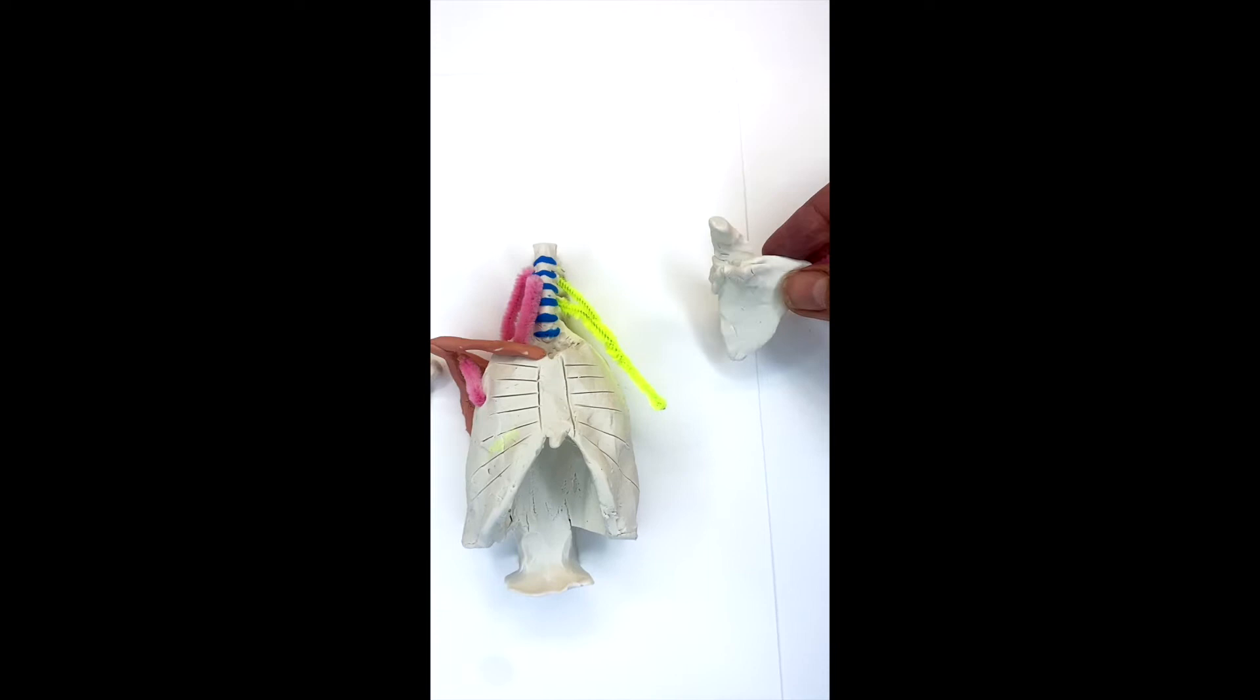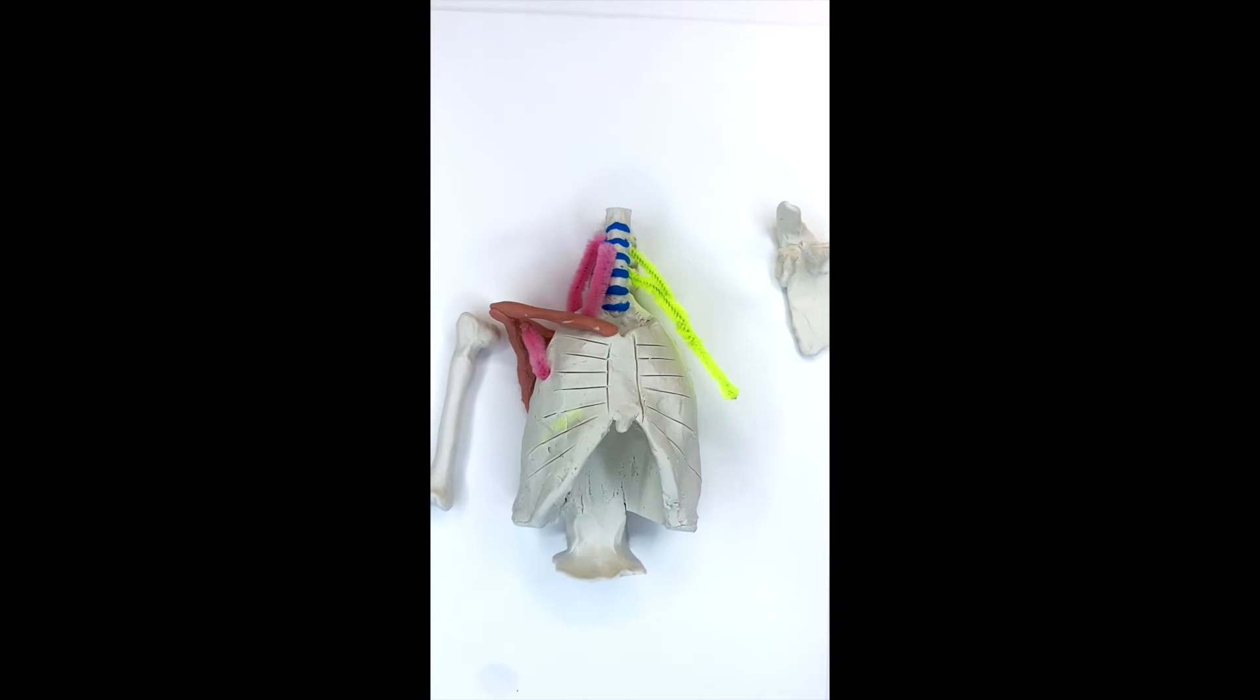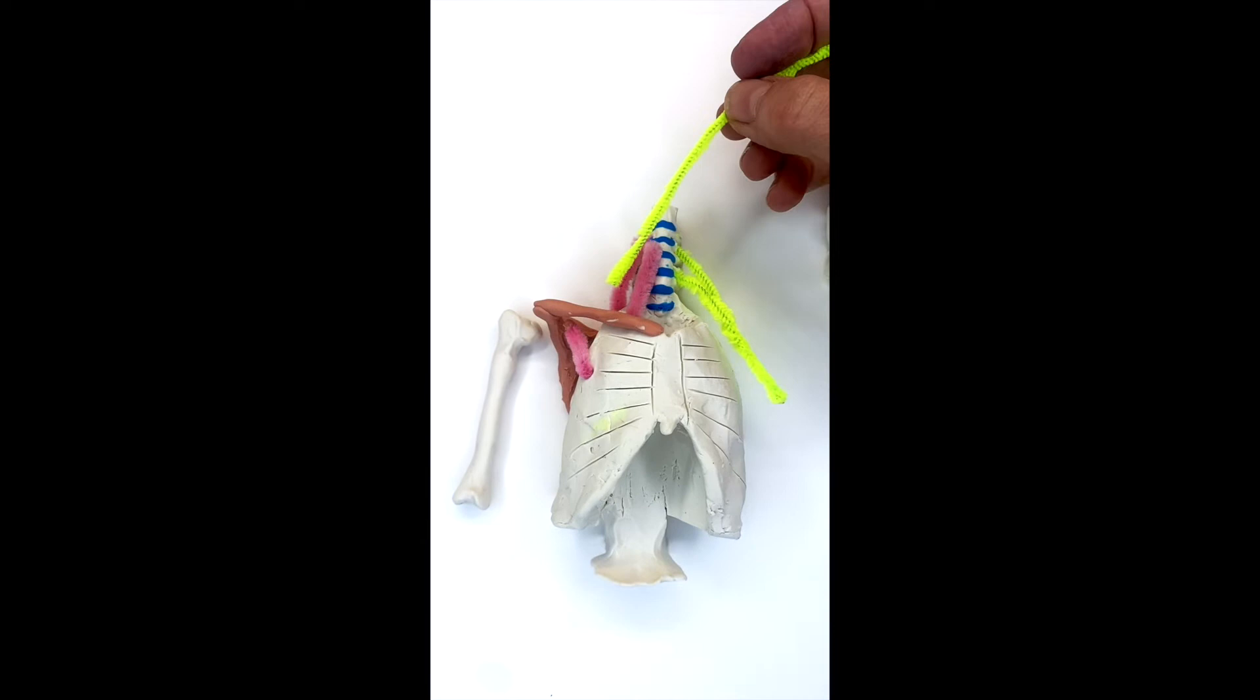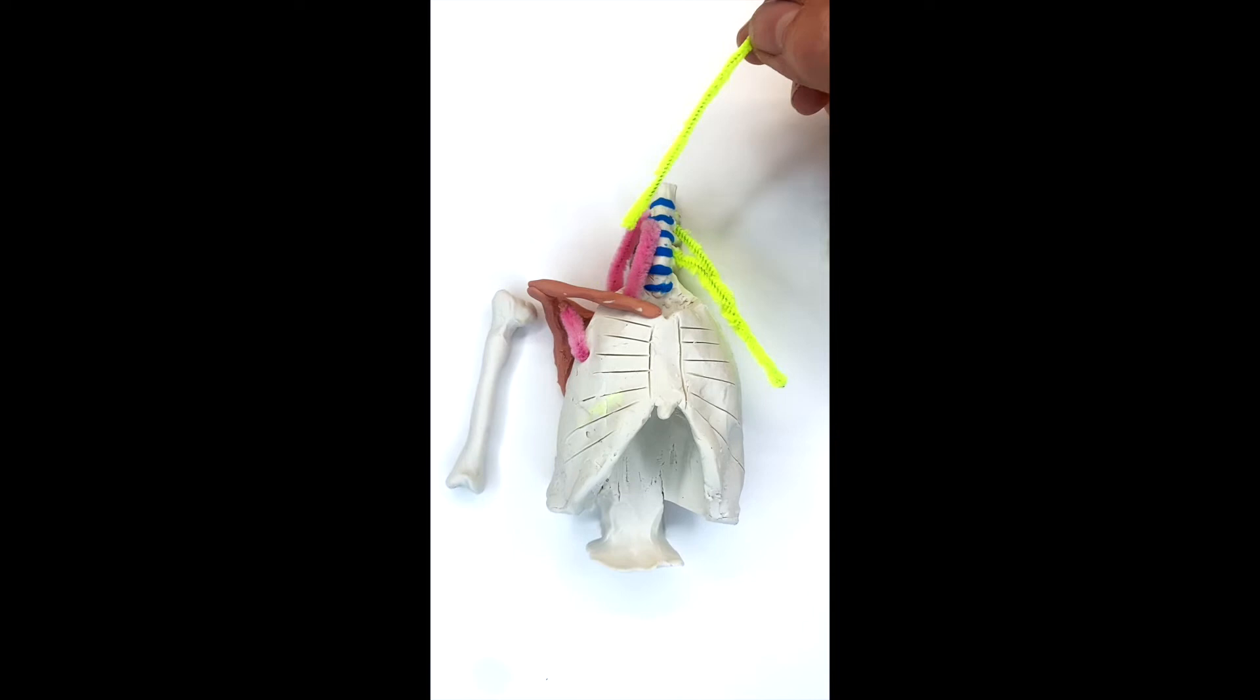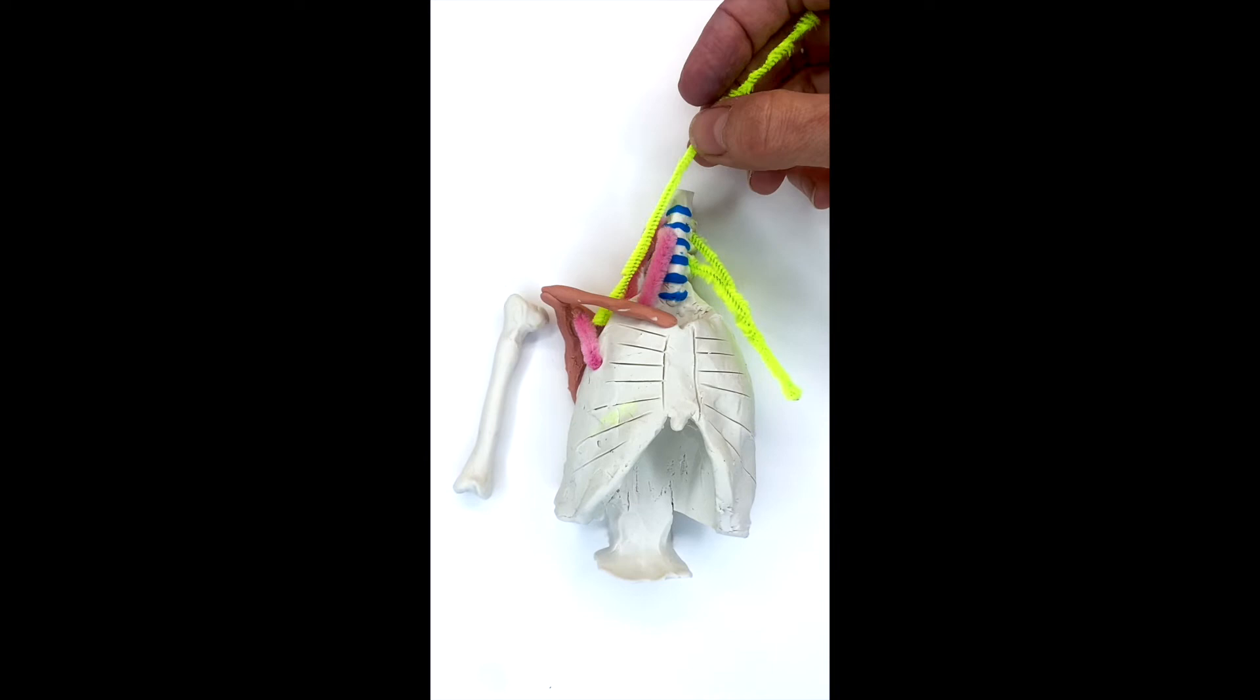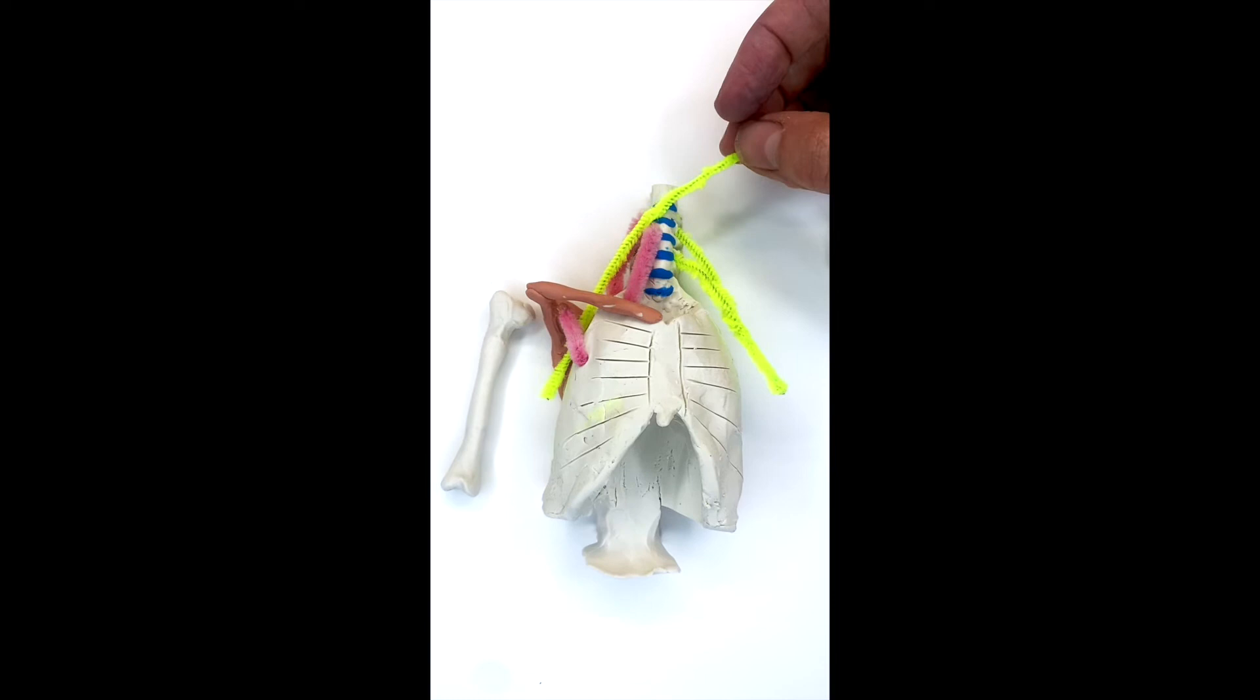This little tiny muscle right here goes from that pointy thing on the front of the scapula down to the rib cage. And so usually it can help elevate the ribs, but it can also pull your shoulder forward and down. So you have a rounded shoulder posture. And the reason that's a problem is because the nerves, I'm going to show you where the nerves go. They're going to go, the same bundle of nerves over here is on the other side as well, of course, and it's going to come kind of in between the scalenes and it's going to go down under the pec minor, pectoralis minor. And then it's going to go down into the arm.